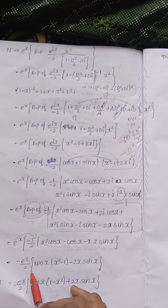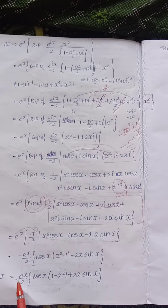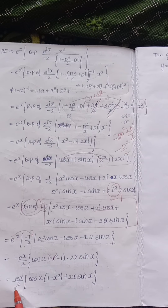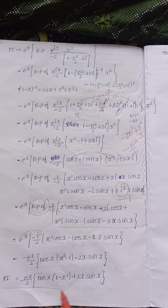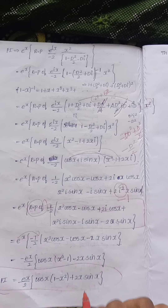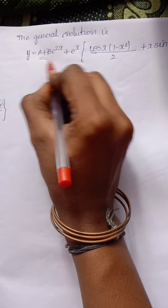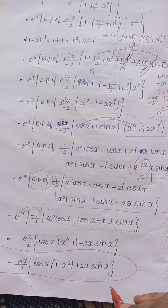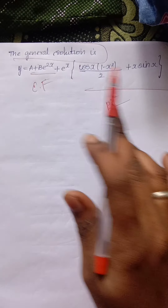Multiplying through by e^x and simplifying signs, the particular integral becomes (e^x / 2) times (cos x times (1 minus x²) plus 2x·sin x). Our general solution combines the complementary function y = A + B·e^(2x) with this particular integral, giving the complete general solution.